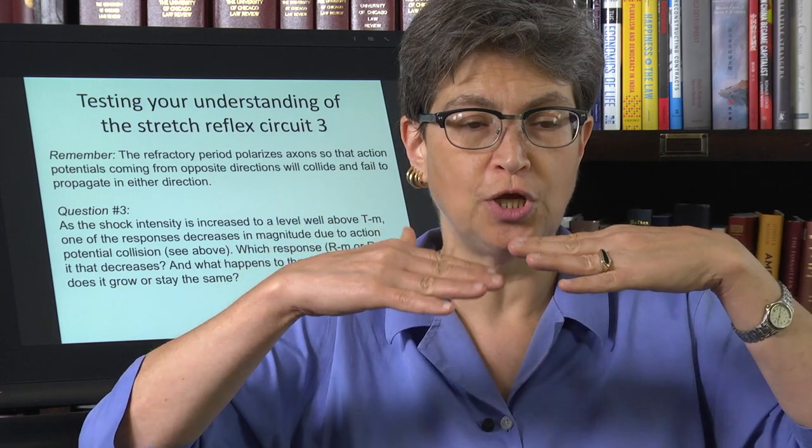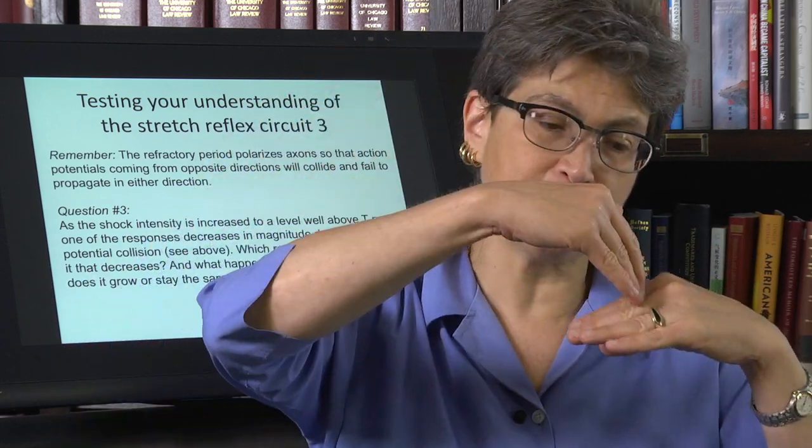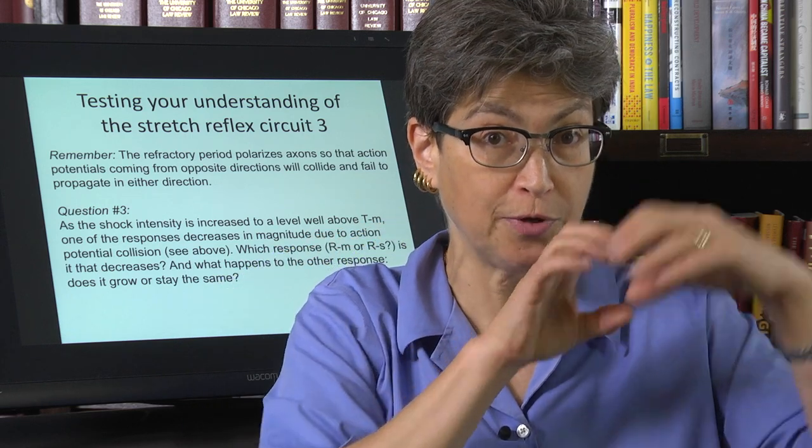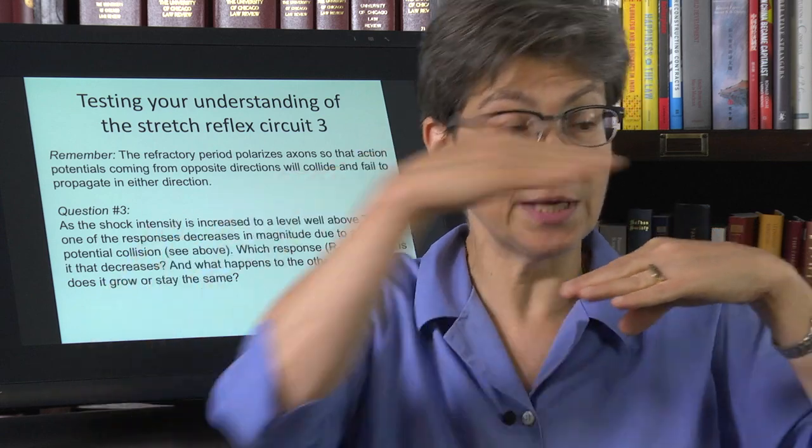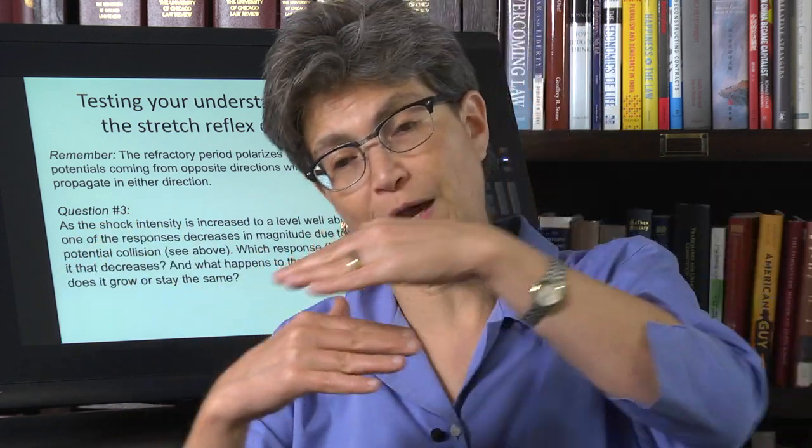Because the refractory period of each will prevent this action potential needs to come over here, but this stretch of membrane is in the refractory period from this action potential. So it can't move past it. And the same is true. This one can't move past this one.